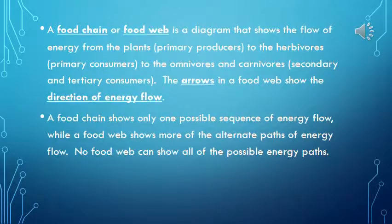A food chain or food web is a diagram that shows the flow of energy from plants (primary producers) to herbivores (primary consumers) to omnivores and carnivores (secondary and tertiary consumers). The arrows in a food web show the direction of energy flow. A food chain shows only one possible sequence of energy flow, while a food web shows more of the alternative paths. No food web can show all possible energy paths.